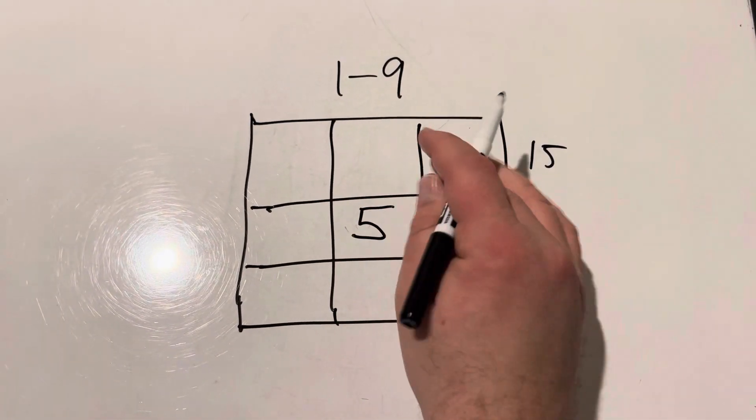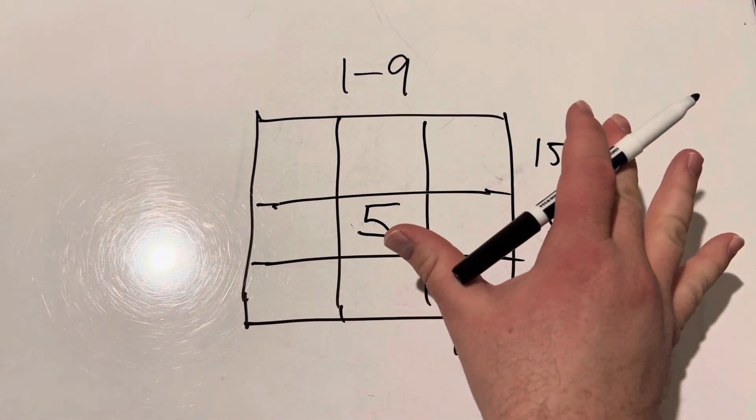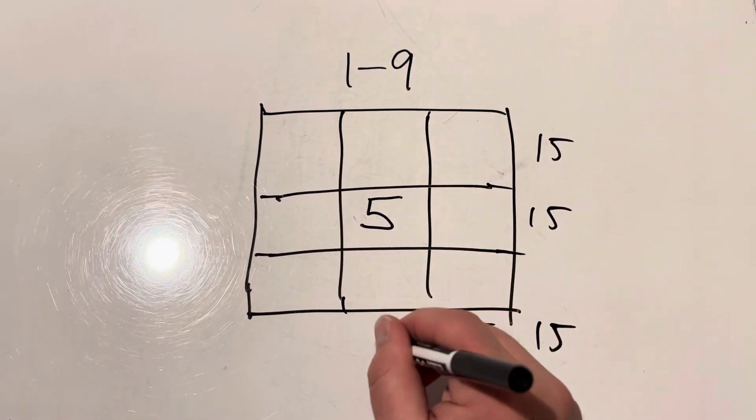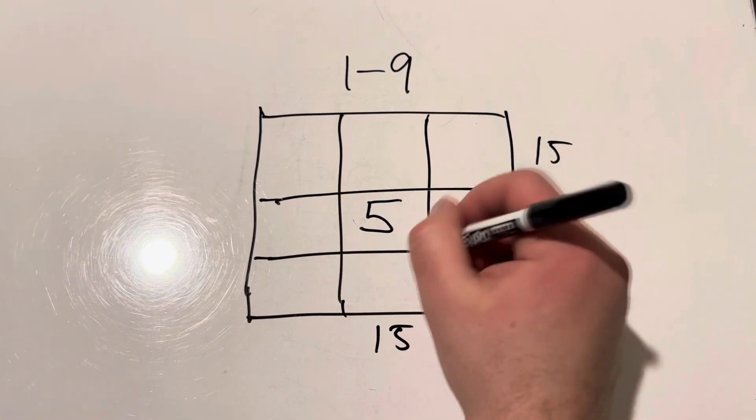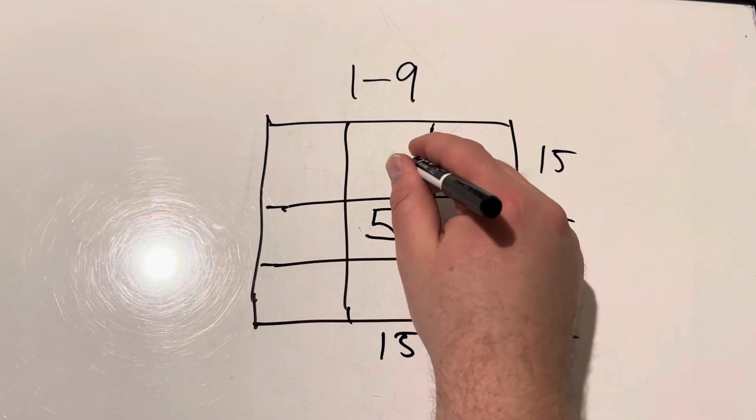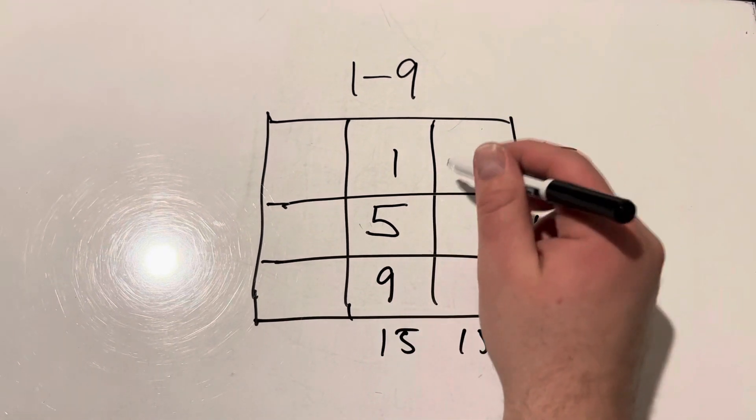If you have five in the middle, everything else falls into place. So if you've got five in the middle, you know that these two squares here need to add up to 10 so that the whole thing equals 15. So we'll go ahead and put one and nine.